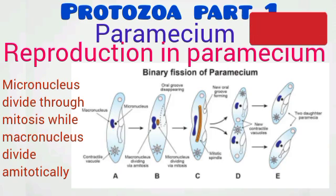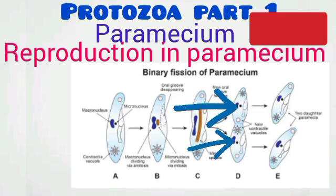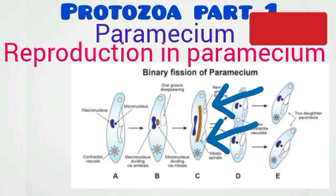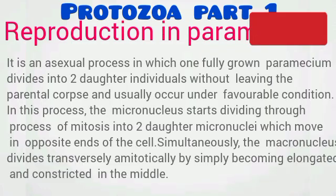Simultaneously, the macronucleus divides amitotically into two, usually through elongation, and the two macronuclei also migrate to opposite ends. The two original contractile vacuoles remain at both ends, and a new contractile vacuole forms at each end, so each daughter cell has the usual two contractile vacuoles. Two new oral grooves begin to form — one at the anterior and one at the posterior. A constriction then forms at the middle, eventually dividing the Paramecium into two daughter cells.